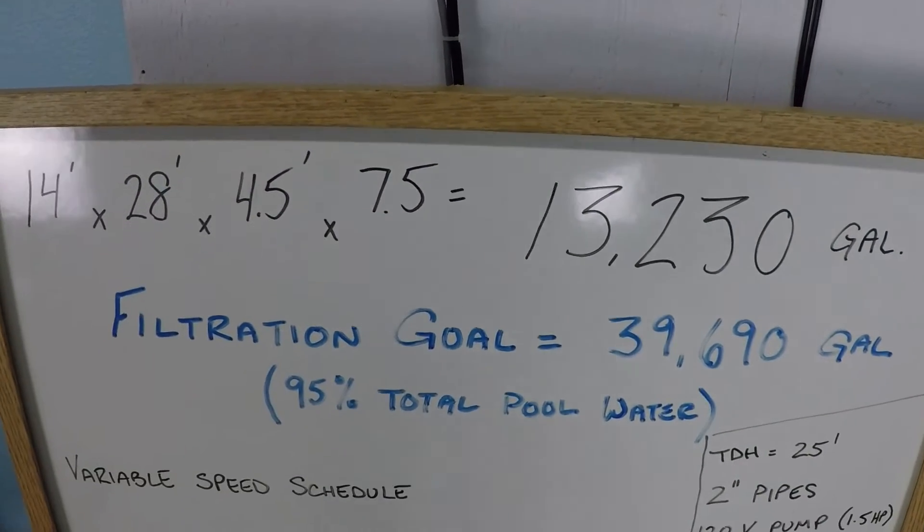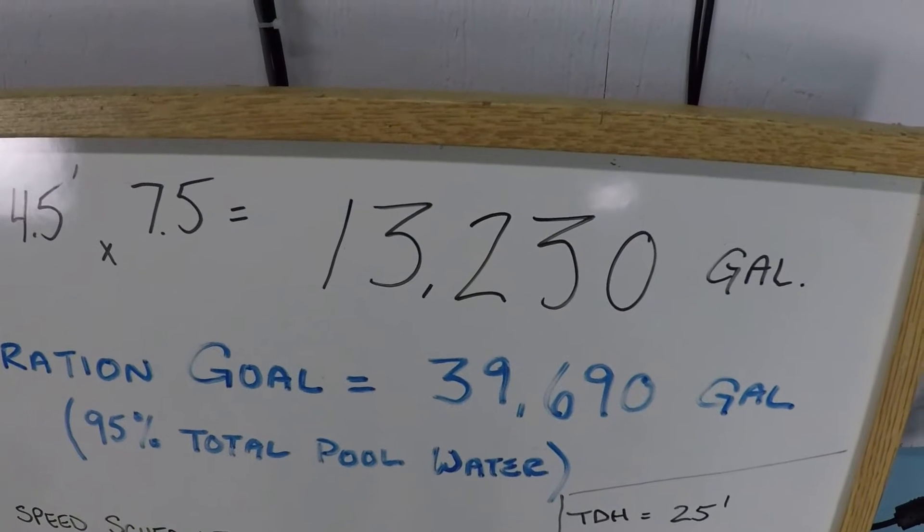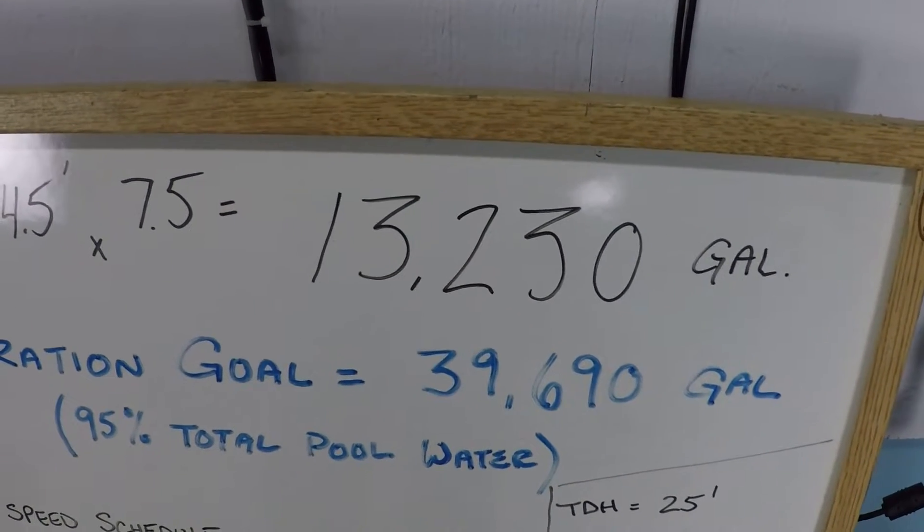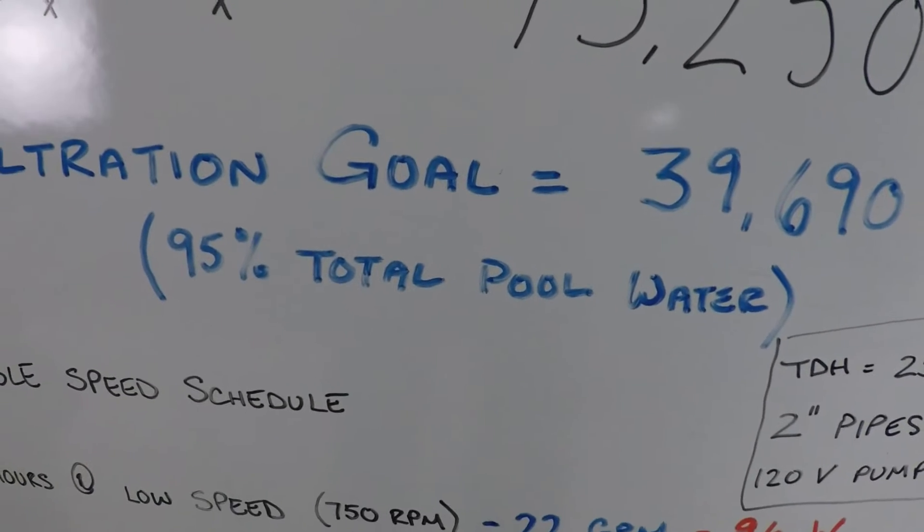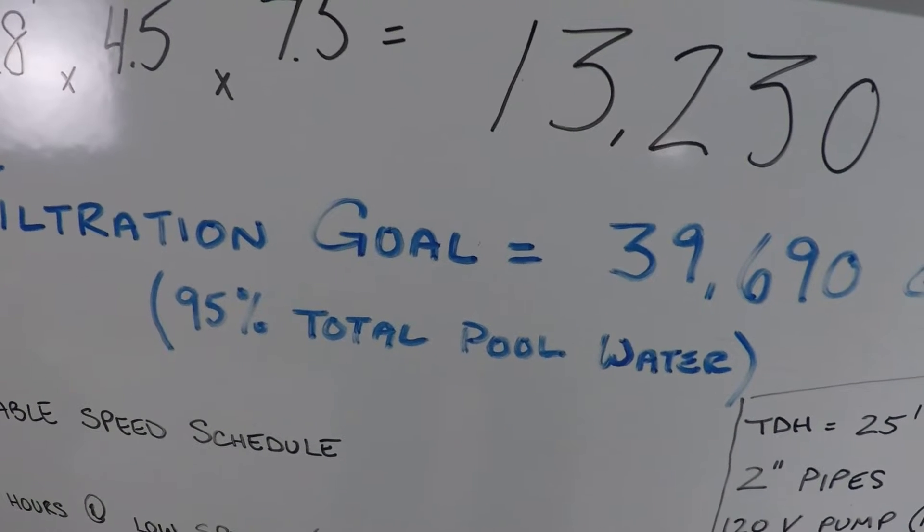So that means our filtration goal for this pool is 39,690 gallons, which is to say three times the volume of the swimming pool, because that's the point at which we have achieved 95% of all of the water in the pool being filtered at least one time.